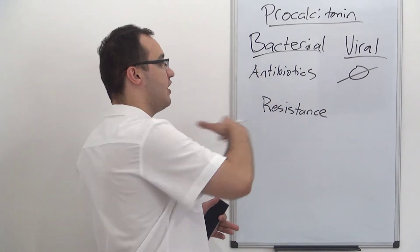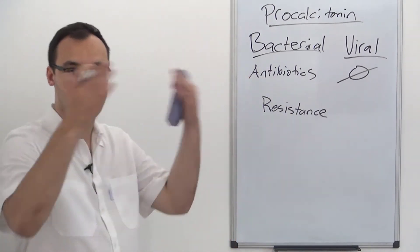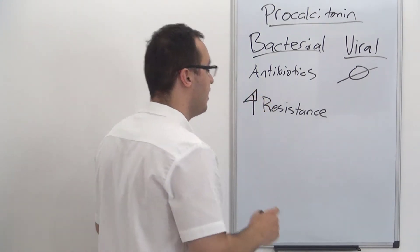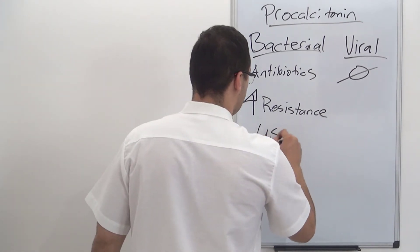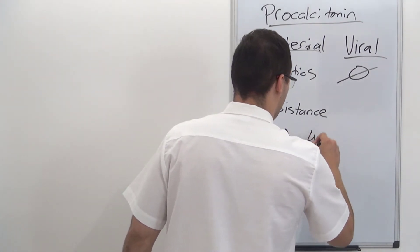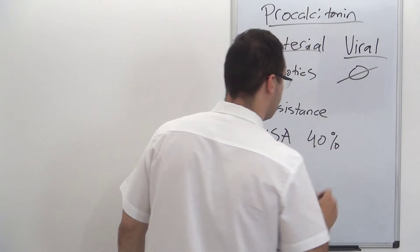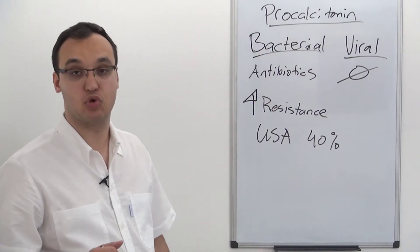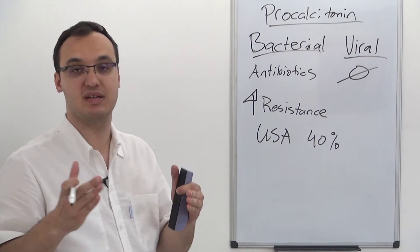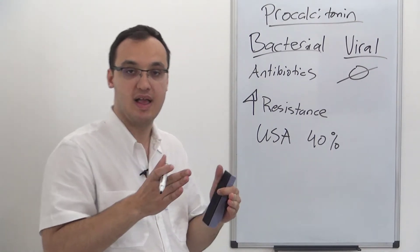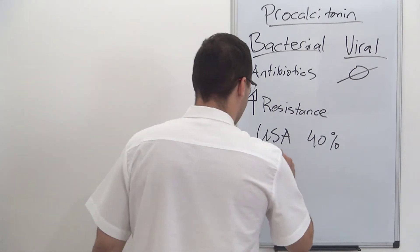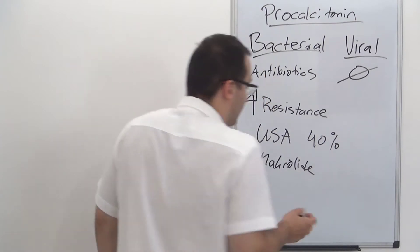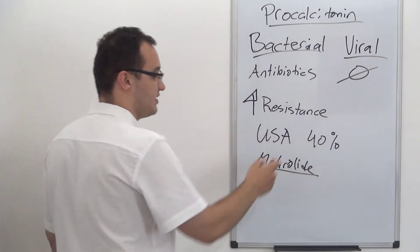If we give a lot of antibiotics in the community, in this country, then we will get very high resistance. For example, in the United States we already have around 40% resistance to macrolide — macrolide resistance for Streptococcus pneumoniae. Streptococcus pneumoniae is the most common bacteria causing pneumonia. And when we try to use macrolides, which are very good medications, they don't really work in the United States.